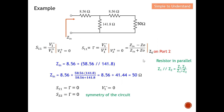With port two terminated in a matched load, we can calculate S11 using the reflection coefficient formula. S11 is also known as the reflection coefficient, and the key requirement is the matched load on port two. To find S11, I need the input impedance Z_in looking into port one. Z_naught is 50 ohms. Looking into the circuit, two resistors are in series, giving a combined value of 58.56 ohms.